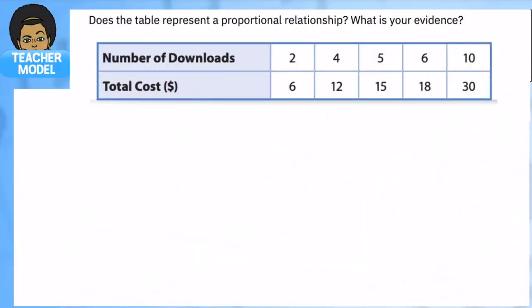In the last lesson we looked at proportional relationships on a graph and with equations. Now we're going to use a table. Does this table represent a proportional relationship and what is your evidence? We're going to do something similar to the last one.